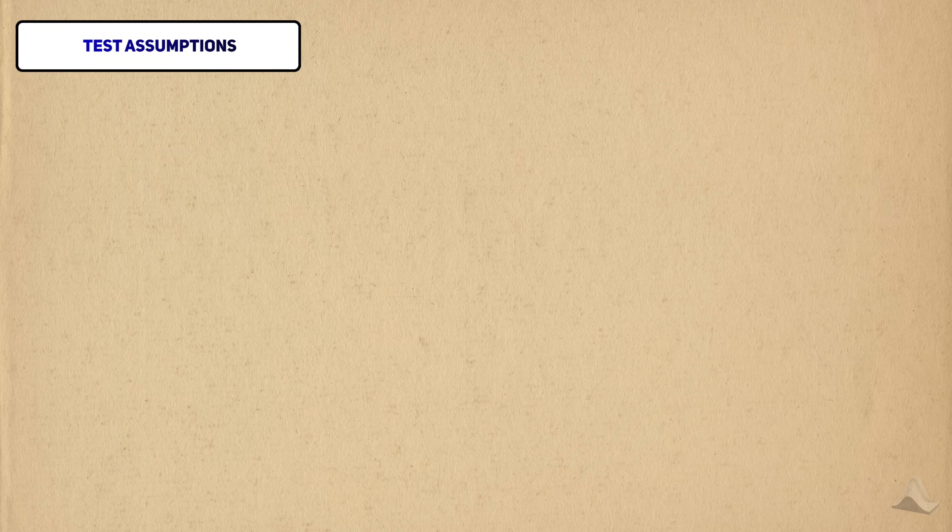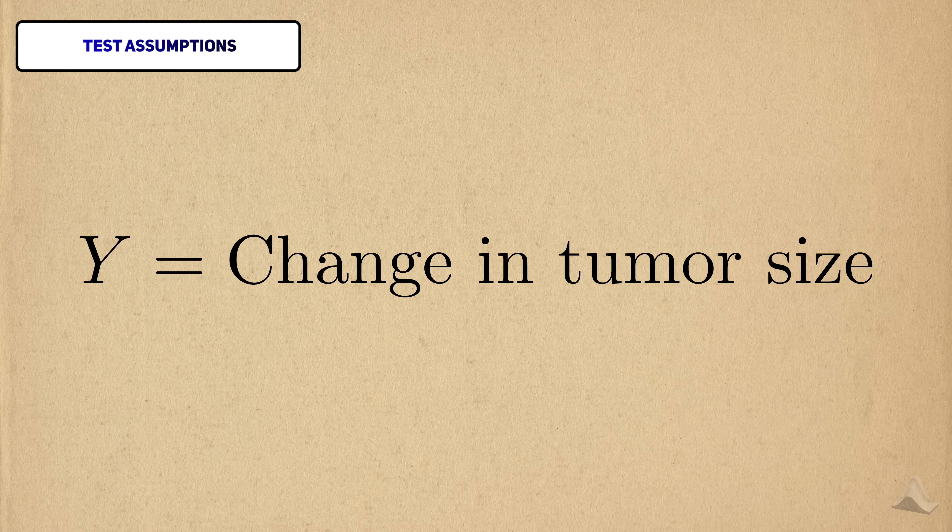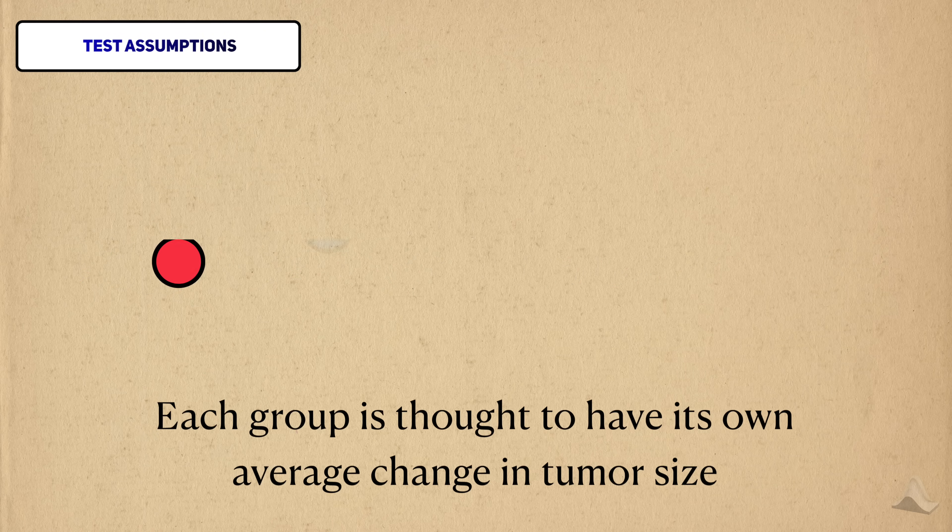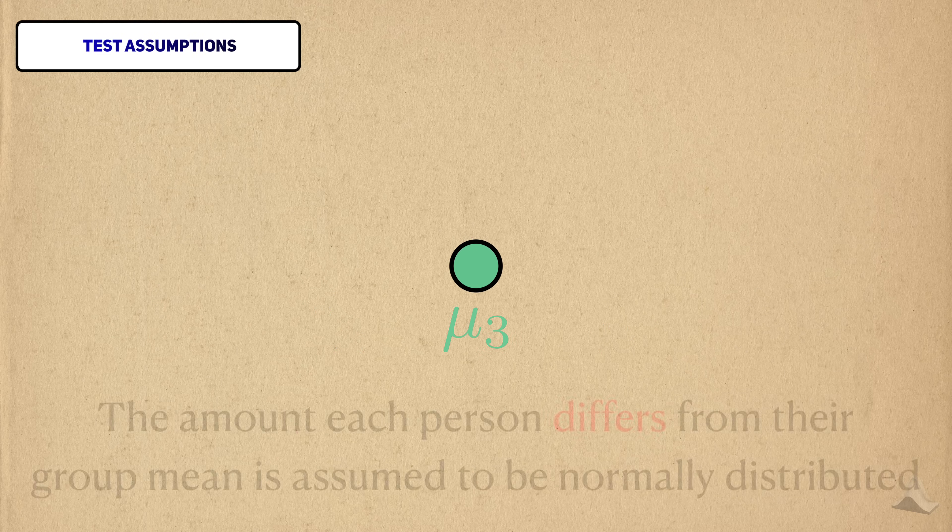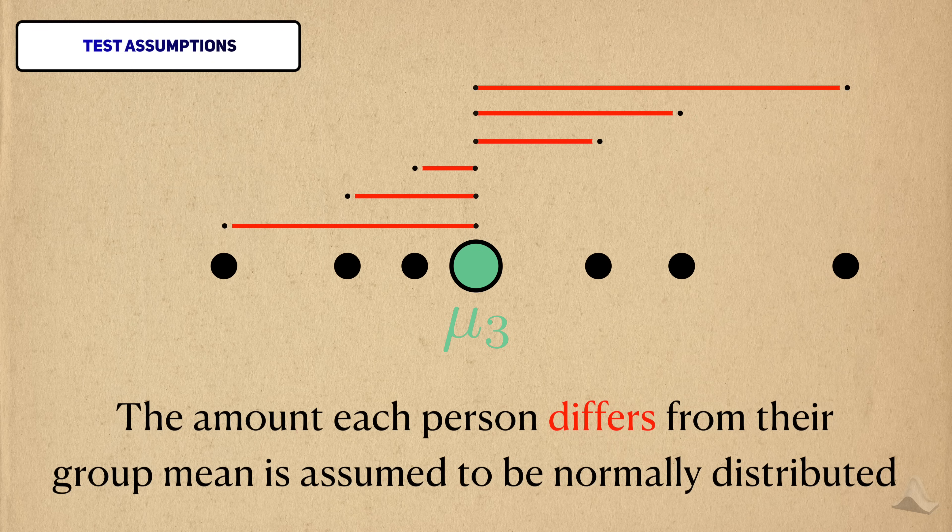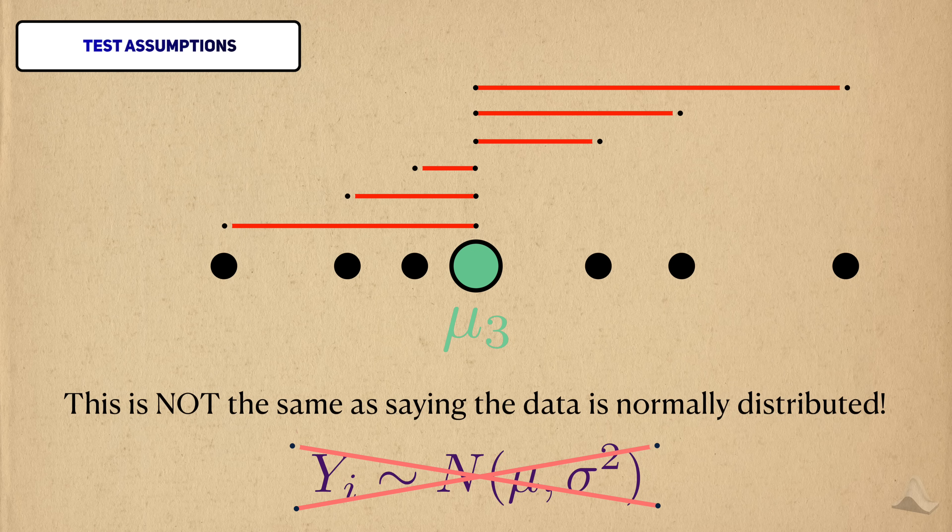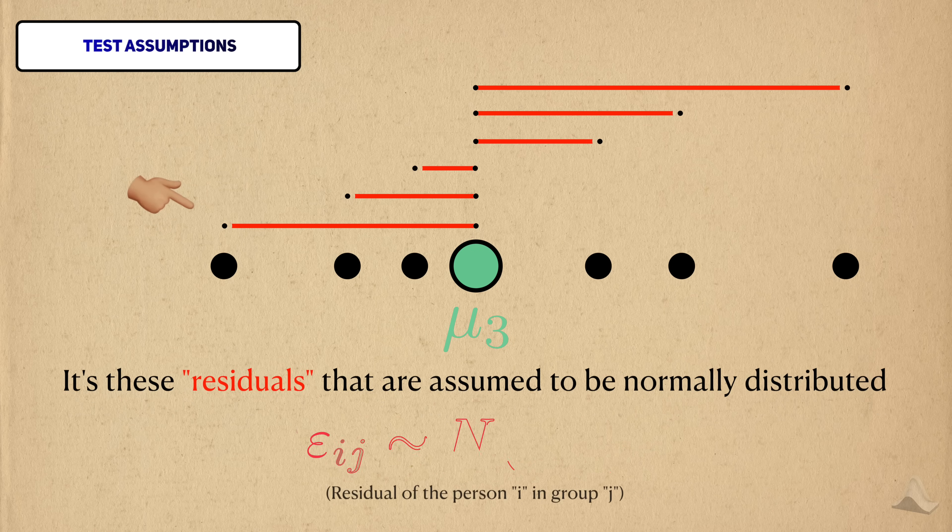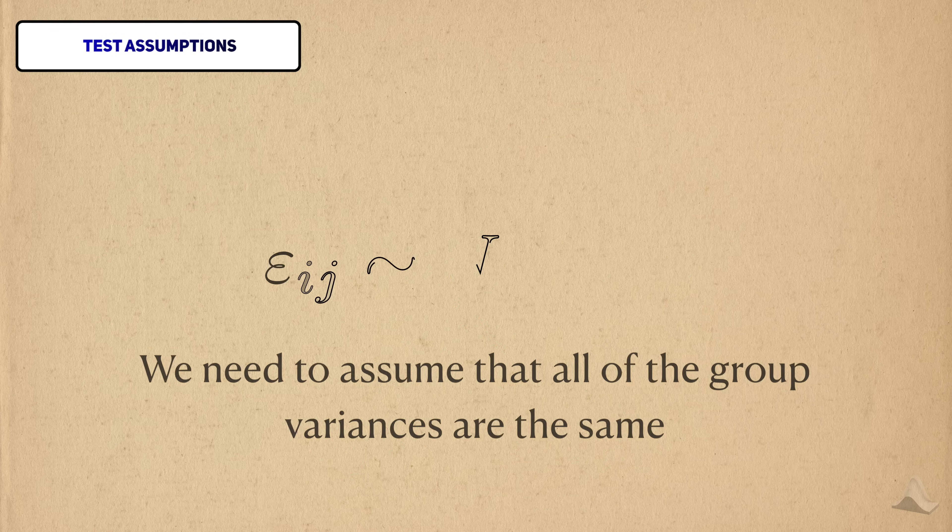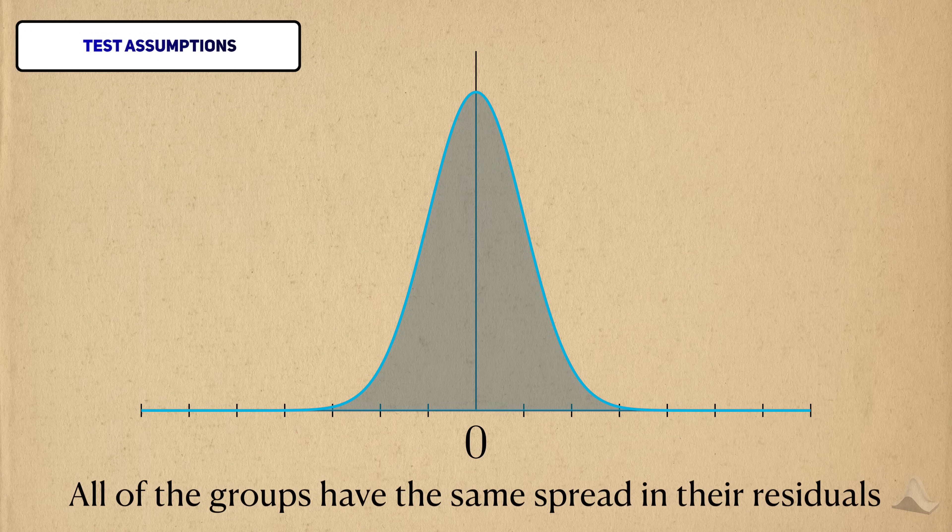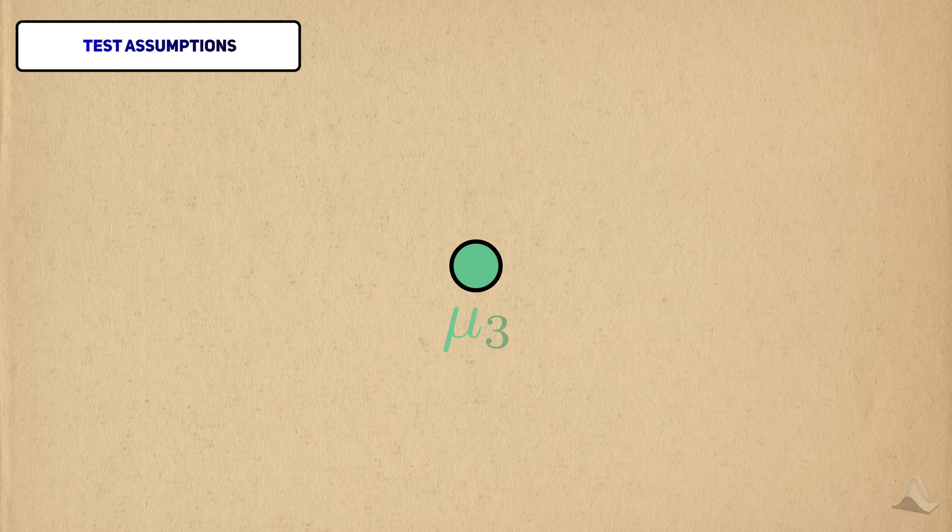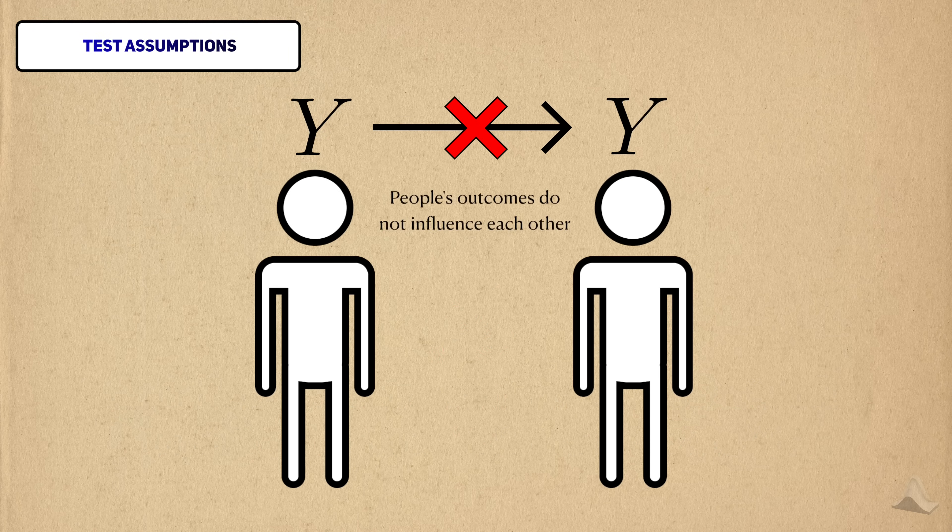All hypothesis tests have assumptions, and the ANOVA is no different. In our example, we're dealing with the change in tumor size, a continuous outcome. Each of the five groups are thought to have their own average change in tumor size, thanks to the drug. For a specific group, the amount that each person differs from their group average is assumed to be normally distributed. Note that this is not the same as assuming that the outcome itself is normally distributed. It's the so-called residuals that are normally distributed. We also need to assume that the residual variances in all the groups are the same. The fancy word for this is homoscedasticity, but visually speaking, it just means that the spread of each group's residuals are all the same. Finally, we need to assume that we have independent observations within each group. One person's change in tumor size cannot influence the change in another person.